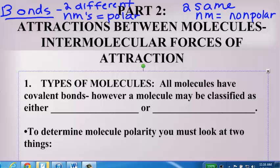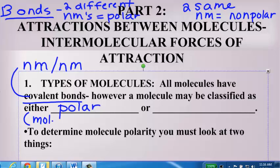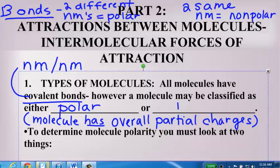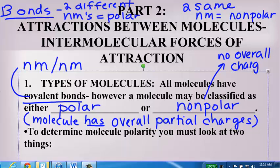Molecule polarity though is dependent on not just the kind of bonds the molecule has, but also the arrangement or the shape of that molecule. All molecules have covalent bonds. However, we can classify a molecule as being either polar, which means the molecule has overall partial charges, or nonpolar, which means there are no overall charges.